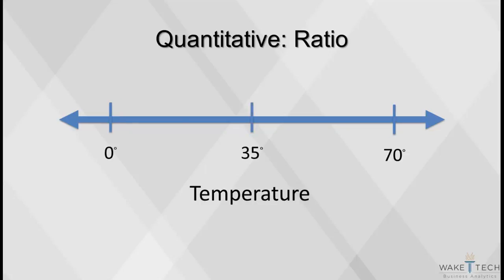However, it doesn't make sense to say that 70 degrees Fahrenheit is twice as hot as 35 degrees Fahrenheit, so temperature is not a ratio variable.